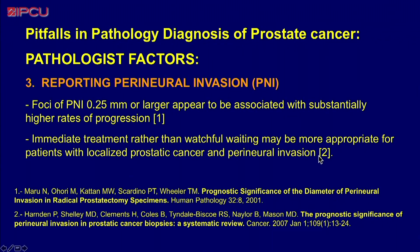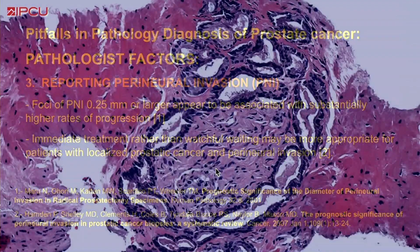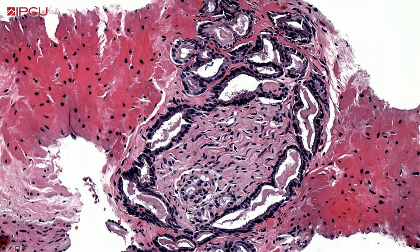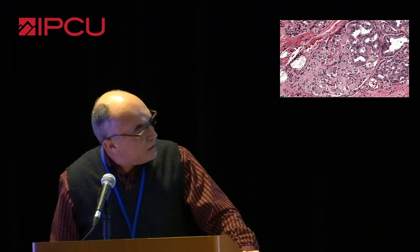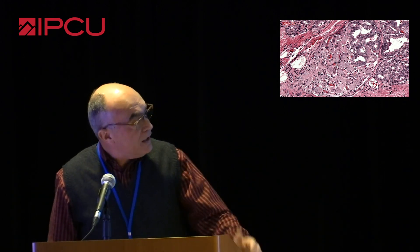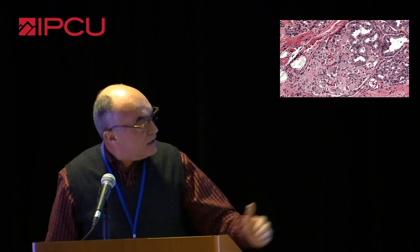Perineural invasion, as well, has created great controversies. The bottom line now is there are two important factors in the diagnosis of perineural invasion: the thickness of the nerve being invaded, and the number of perineural invasions in the patient. This is a very thick nerve that needs to be reported because there is high correlation — these thick nerves are very close to the extraprostatic space. These patients correlate very well with extraprostatic extension in the radical prostatectomy. This ganglion, also in a core biopsy, is invaded. Ganglia are outside of the prostate and have to be reported as well.